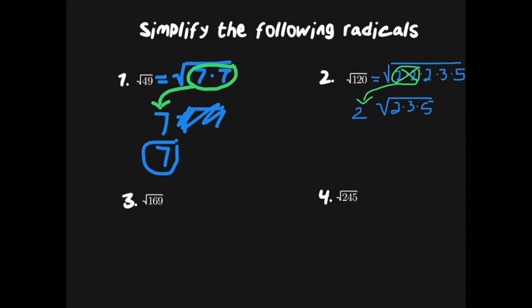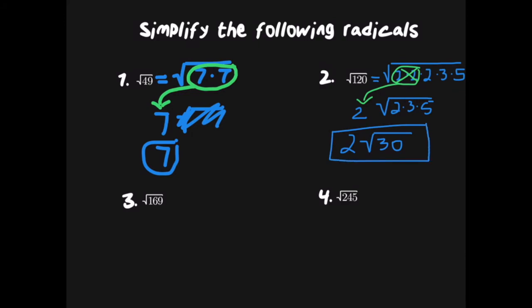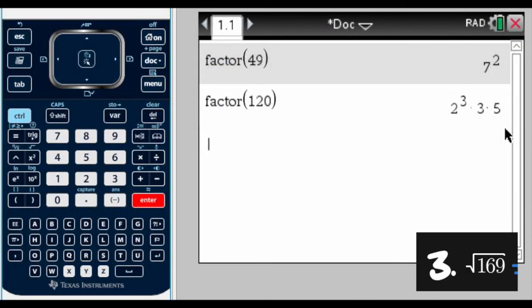The 2 stays outside, and inside we have 2 times 3 times 5. Two times 3 is 6, times 5 is 30, so this simplifies to 2 times the square root of 30. That is the most we can simplify this radical.